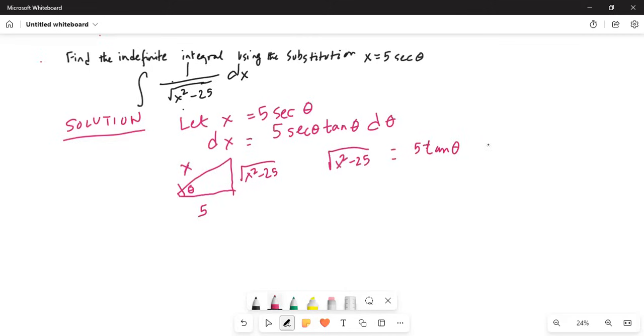So square root of x squared minus 25 is equal to 5 tangent of theta. Why? Because tangent of theta is equal to opposite side by adjacent side, which is opposite side is square root of x squared minus 25. And what is adjacent side is 5. Therefore, if you multiply by 5 on both sides, 5 tangent of theta is equal to square root of x squared minus 25.